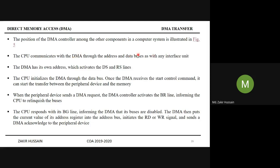The DMA has its own address which activates the DMA select (DS) and register select lines. The CPU initializes the DMA through the data bus. Once the DMA receives the start control command, it can start the transfer between the peripheral device and memory.